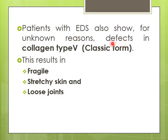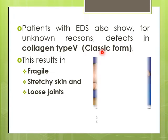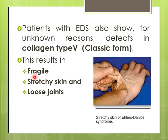Defects in collagen type 5 result in the classic form of EDS. Patients with this classic form may show fragile and stretchy skin as well as loose joints.